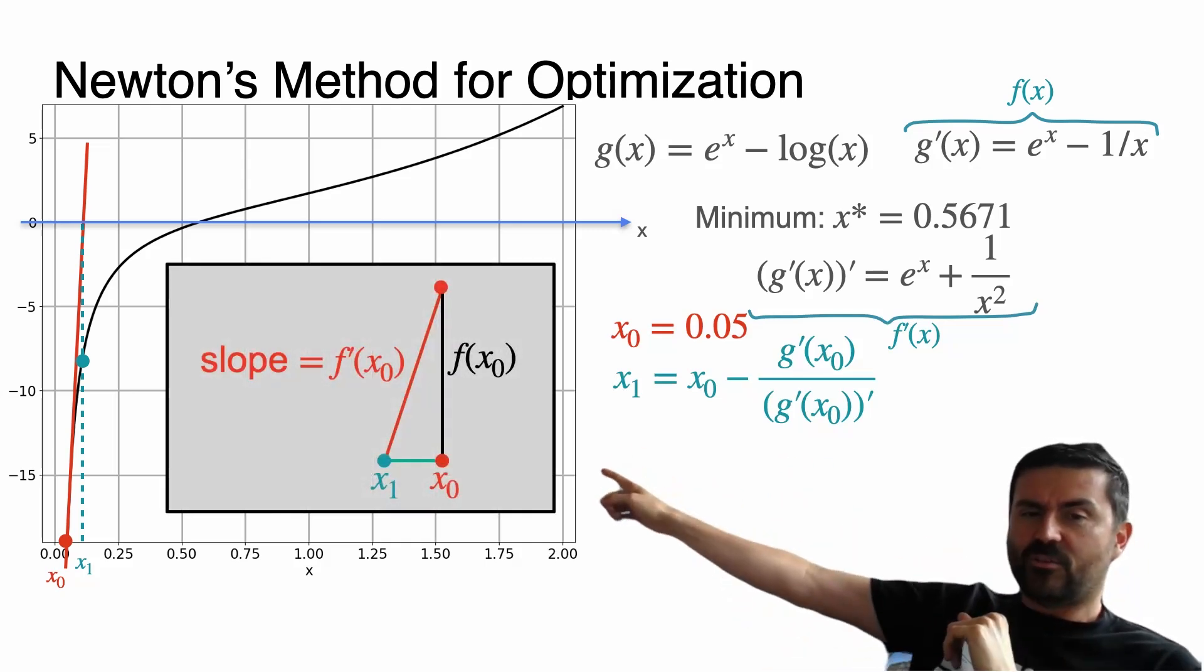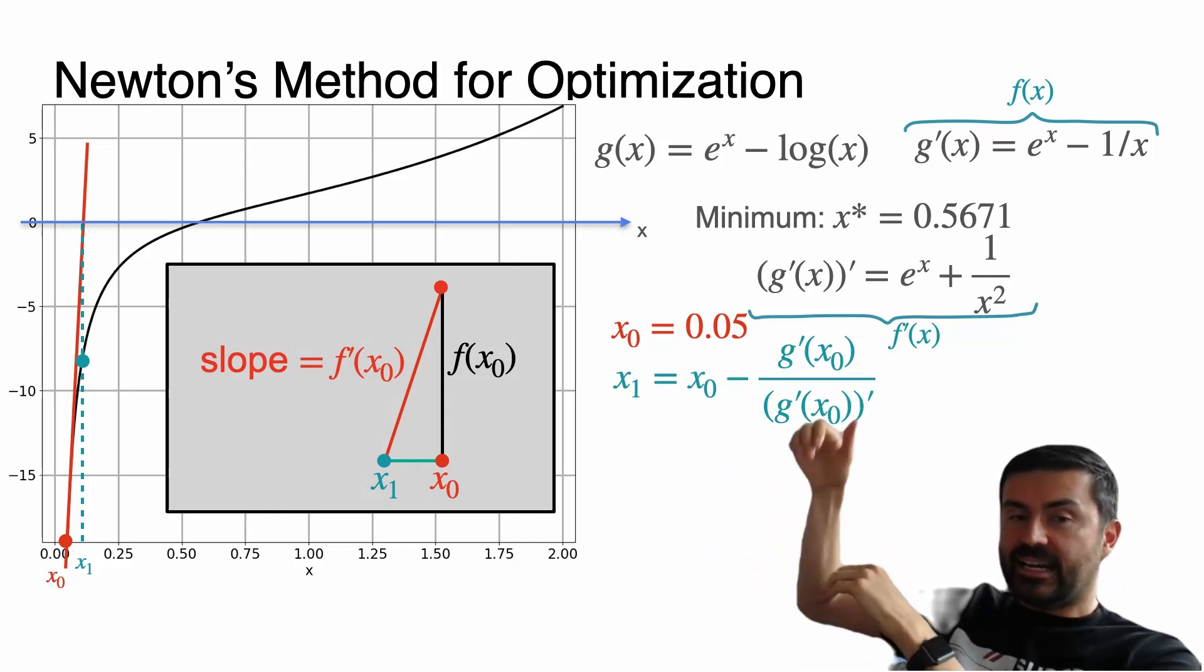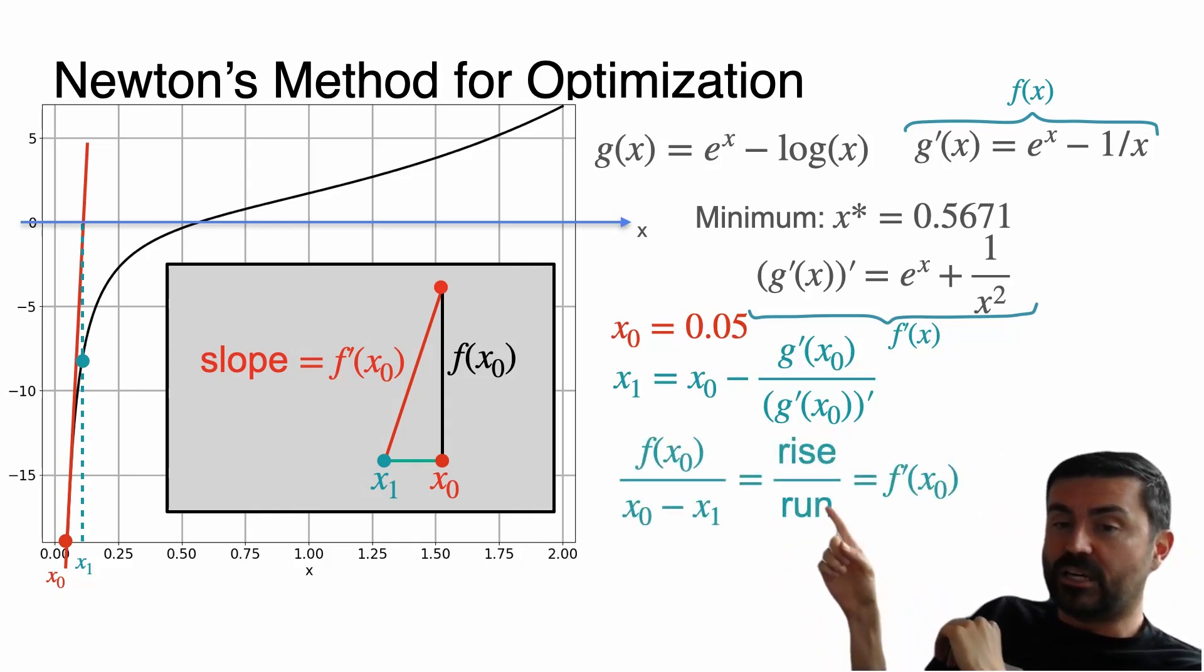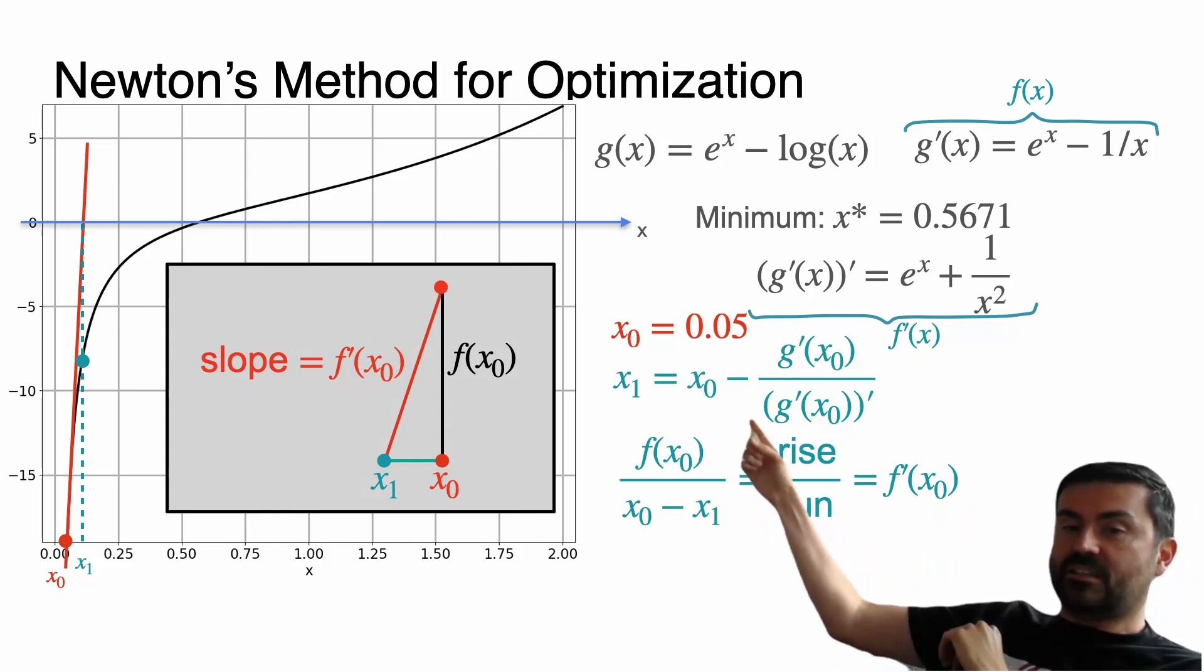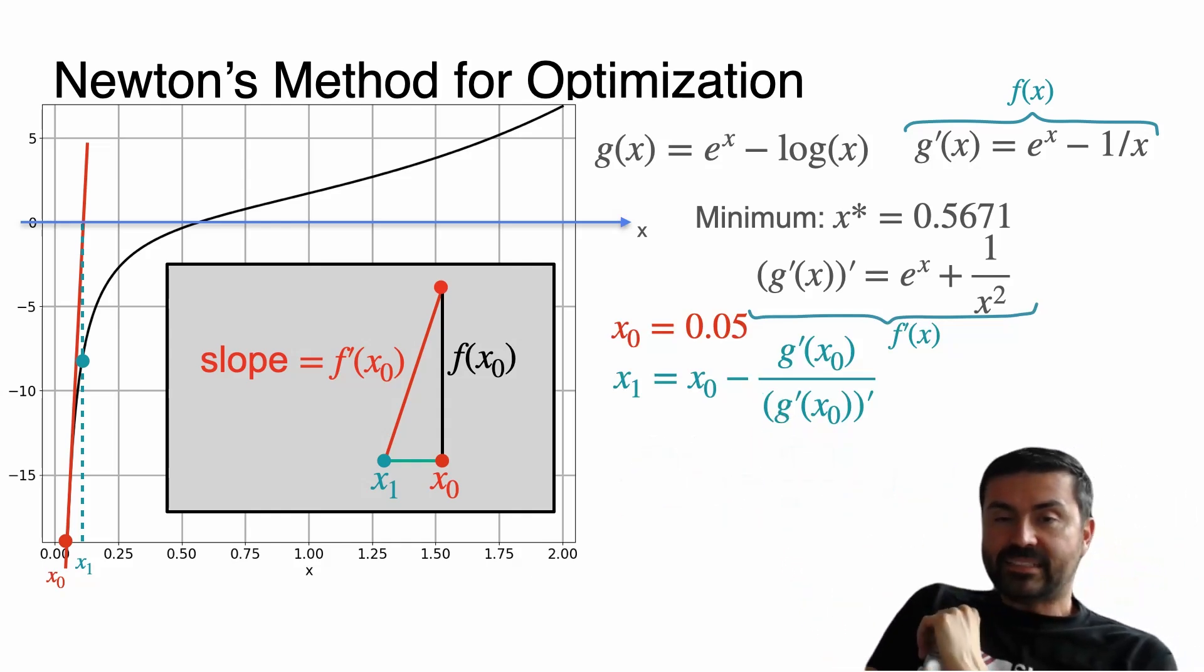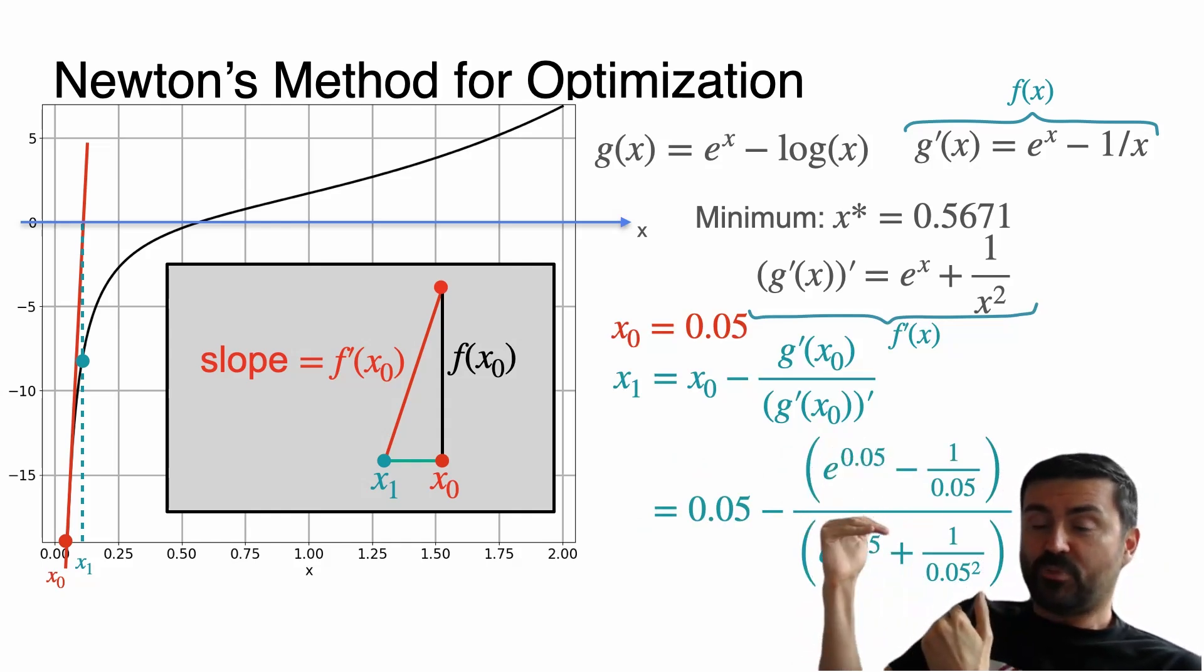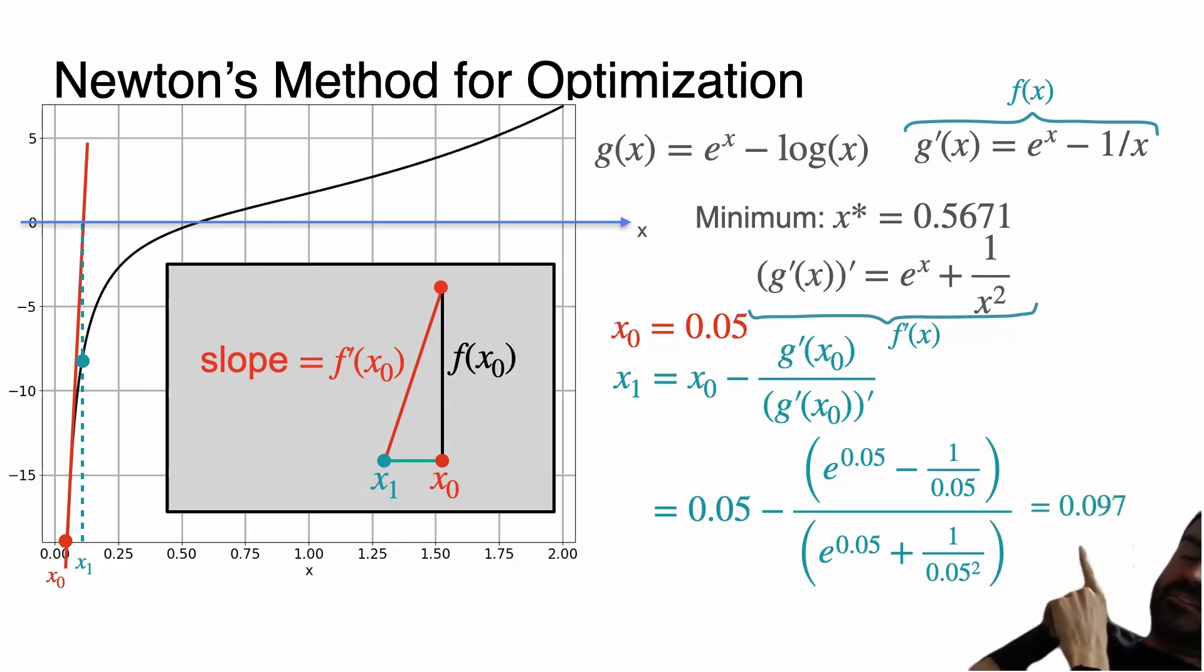Well, take a look at that triangle over there. The base is x₀ - x₁ and the height is f(x₀). So when you take the slope, which is f'(x₀) because it's the tangent, then you have that the slope is rise over run. So you get this equation over here, and this equation turns into this one on top. So now when we let x₁ = x₀ - f(x₀) / f'(x₀), then we get this because we've calculated the derivative here. And that value is going to be 0.097.